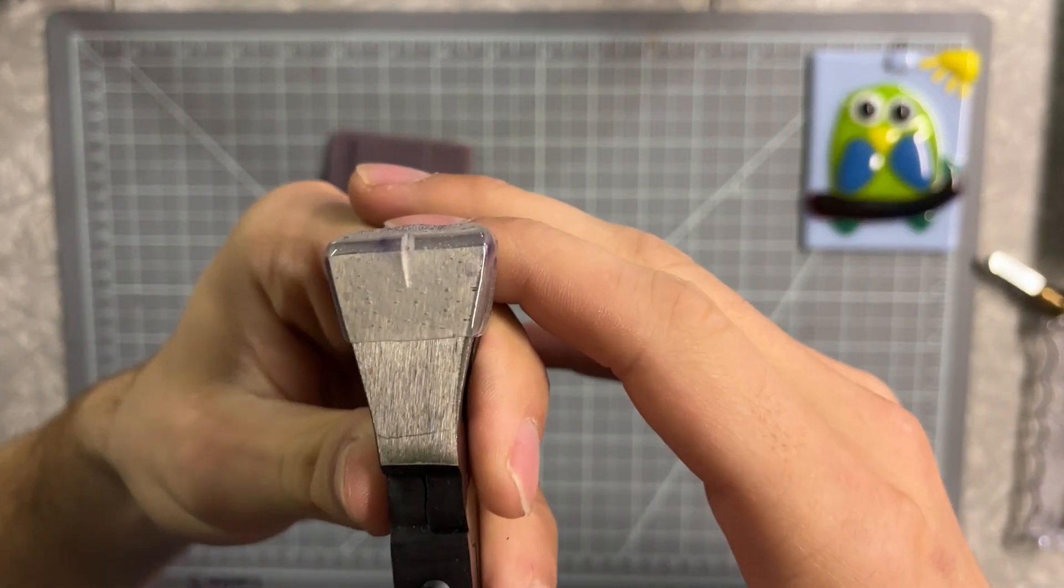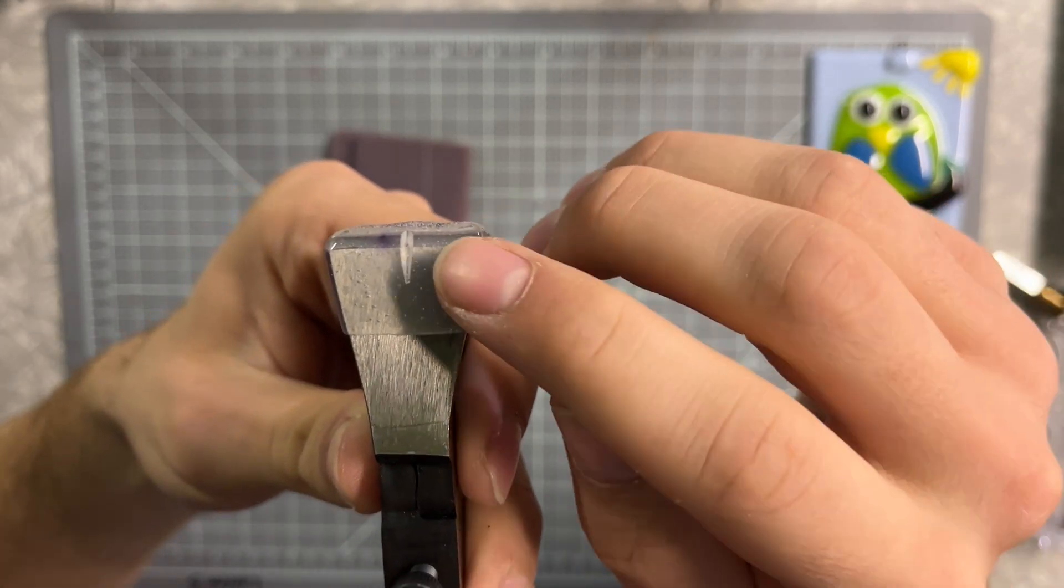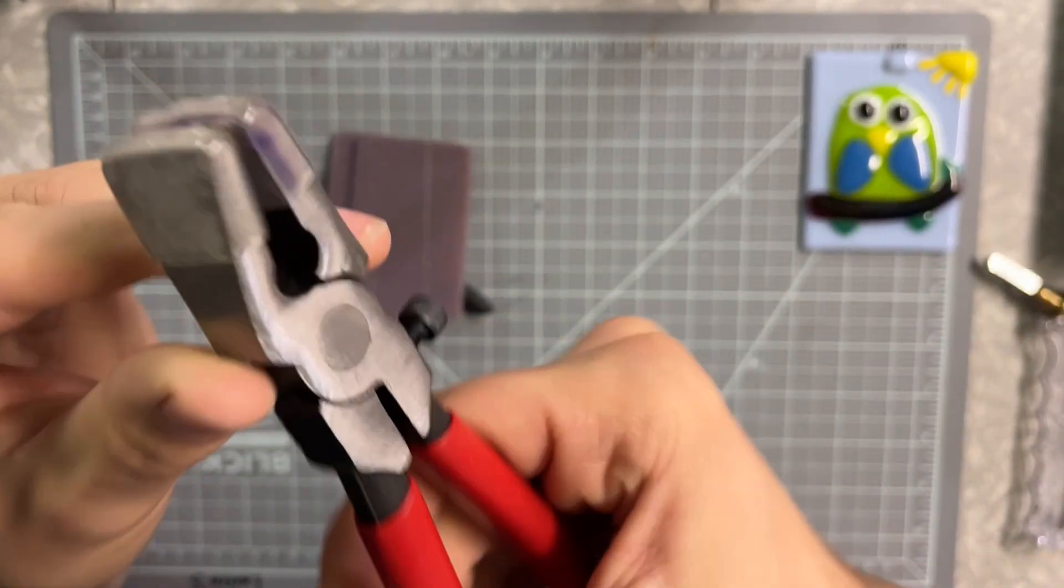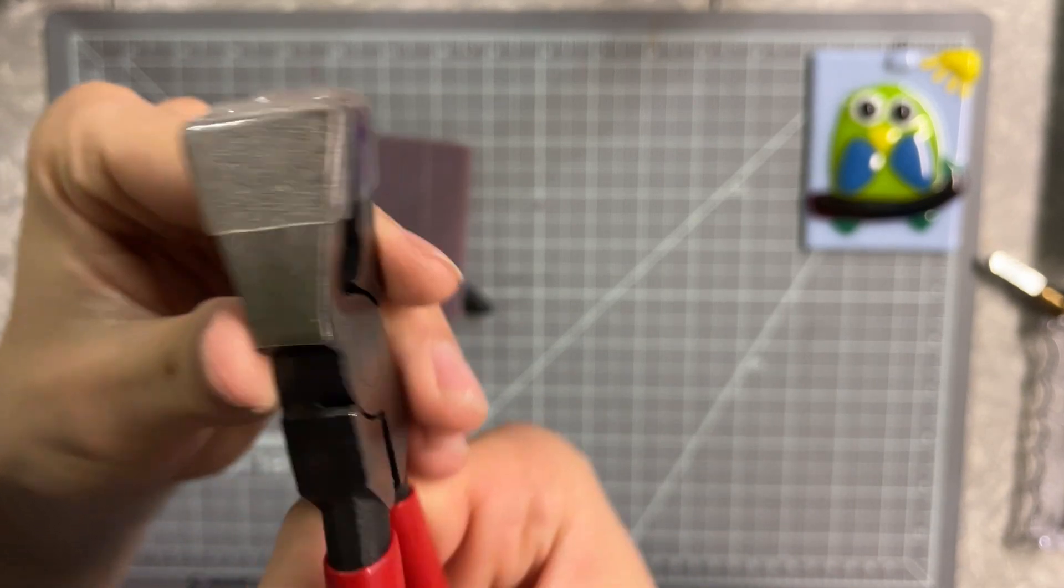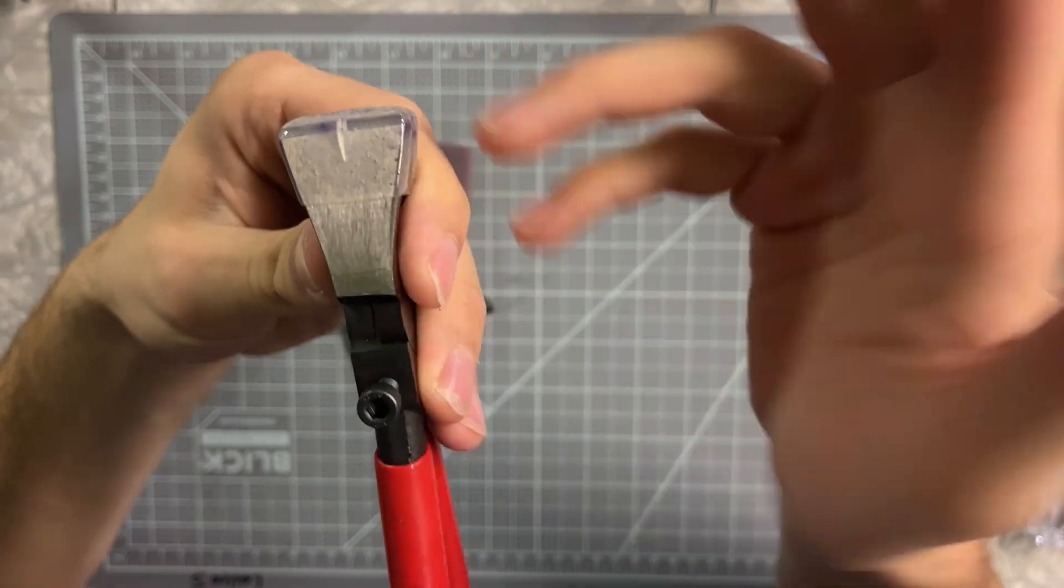You always want to use the pliers facing up in the right direction. You can see on these pliers there's a little indicator, a little line on this side, and there's no line on this side.